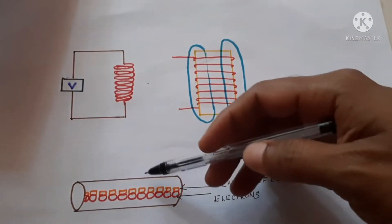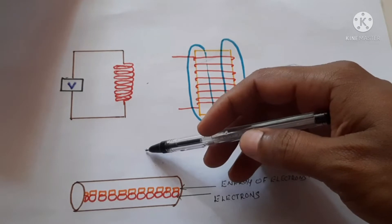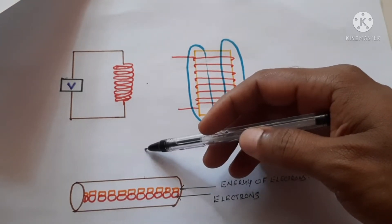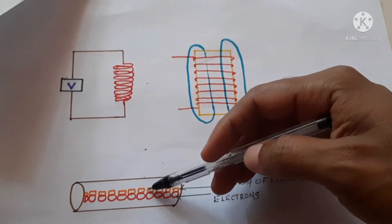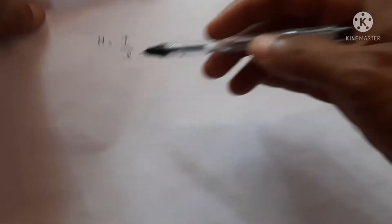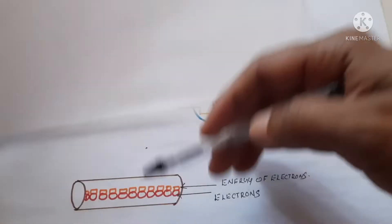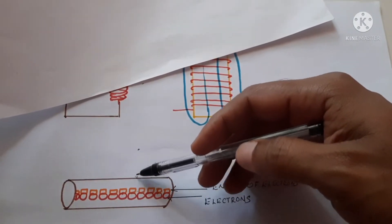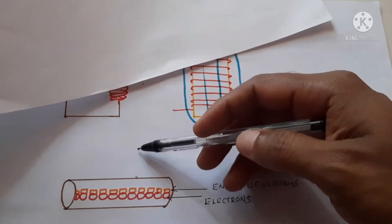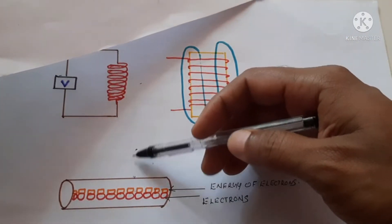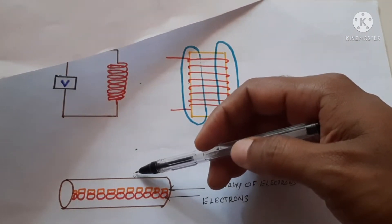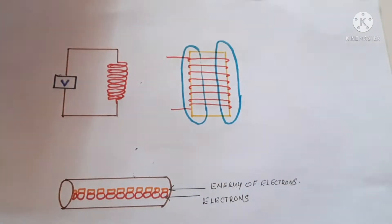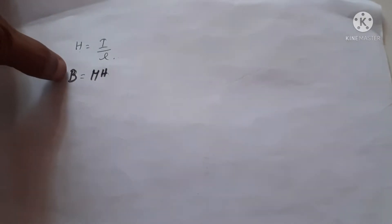The magnetic field H is also inversely proportional to the length. If we take the magnetic field strength at any point far from the conductor, the strength will be very less — as the distance from the conductor increases, the magnetic field strength decreases. If the point is very near to it, the magnetic field strength will be very high. If we wind the wires like this, it becomes an inductor.